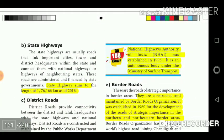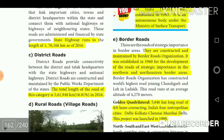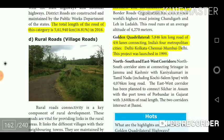The National Highways Authority of India (NHAI) was established in 1995 as an autonomous body under the Ministry of Surface Transport. Border Roads Organization, established in 1960, constructs and maintains roads of strategic importance in northern and northeastern border areas. The Golden Quadrilateral is a 5,846 km long road of 4 to 6 lanes connecting India's four metropolitan cities: Delhi, Kolkata, Chennai, and Mumbai. This project was launched in 1999.